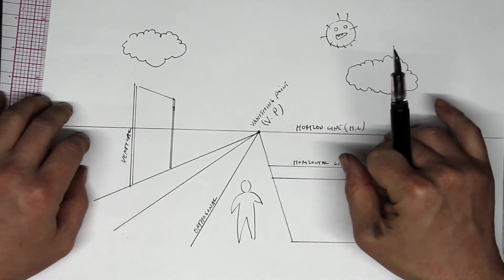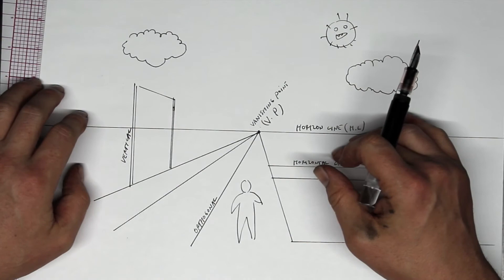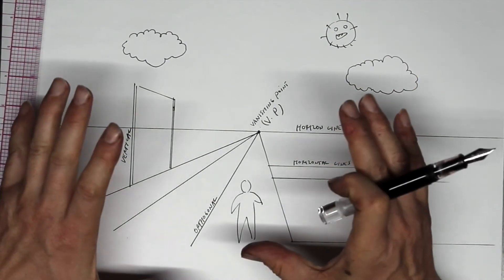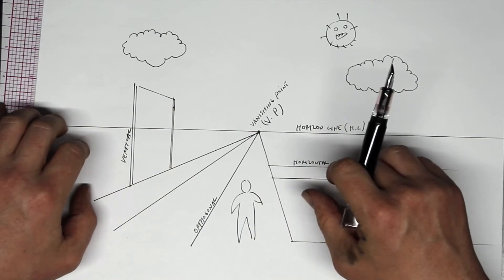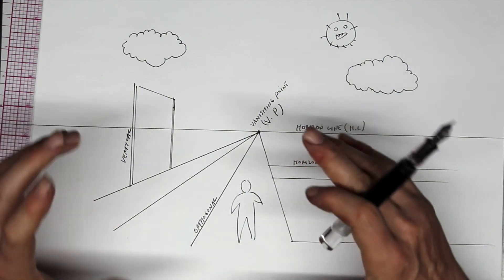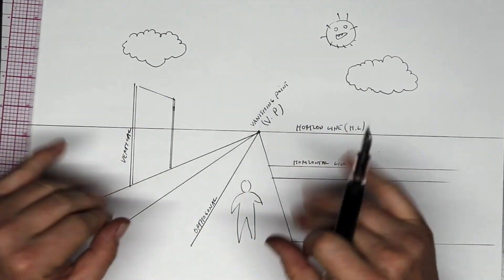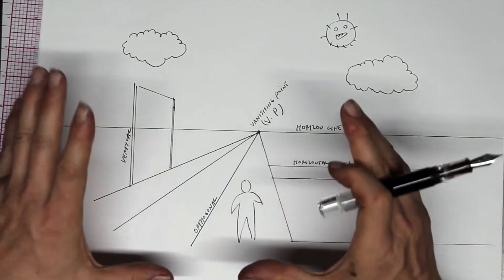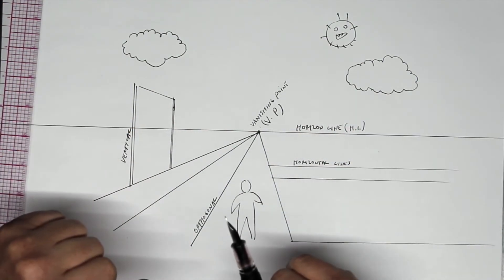So what is perspective useful for? Well, quite a few things. Anytime I need to draw architecture, anytime I need to draw receding space, I need to have a good understanding of linear perspective to do that. What else is it good for? Well, just about everything is subject to perspective: the human body, animals, trees, even. So this is something we need to learn how to do really well before we're really competent as draftsmen.